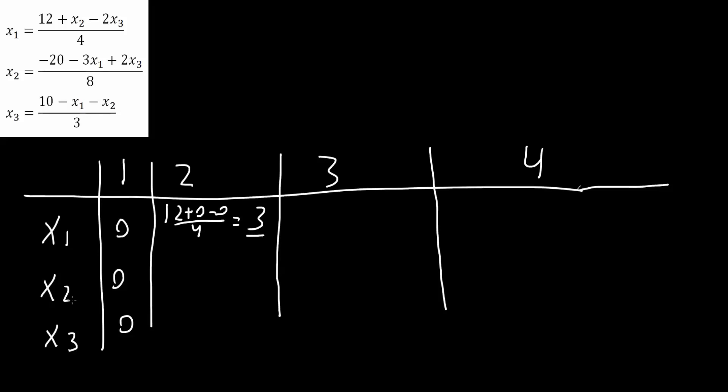And now we will do x2. Now the trick here is that x1 is no longer 0, it's 3. So whenever I see an x1, I plug in 3. So I get negative 20 minus 3 times 3 plus 2 times 0 divided by 8. And this right here would give us negative 29 over 8.